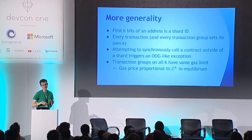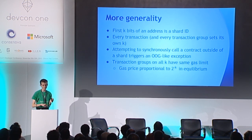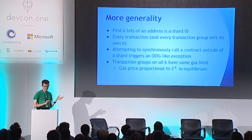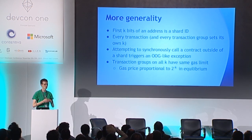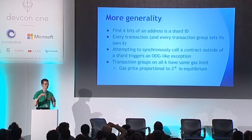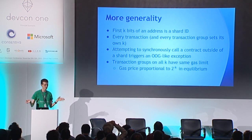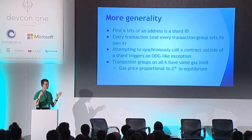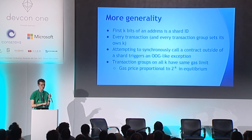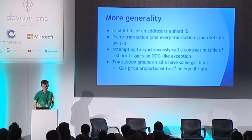Here's one possible model for more generality: k bits of an address is a shard ID, and k is set by the transaction. Every transaction sets its own k. Setting k equals zero means your transaction can do everything globally. Setting k equals 10 means your transaction only affects things that have a particular 10-bit prefix.